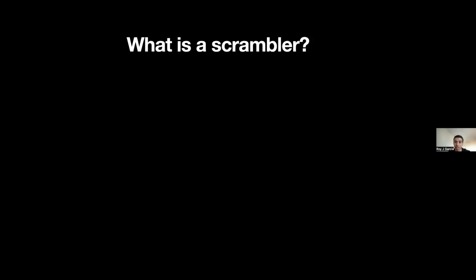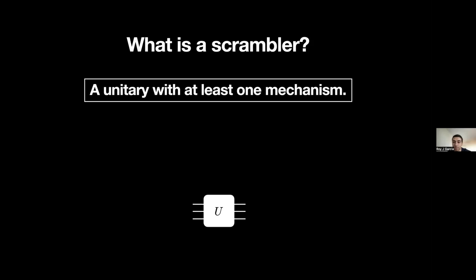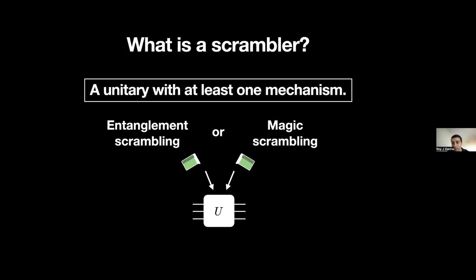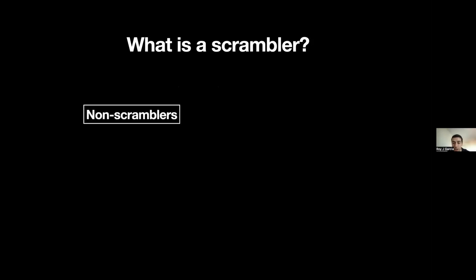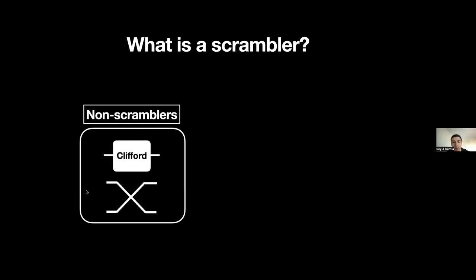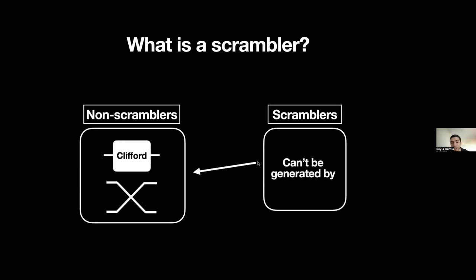We can now answer the question: what is a scrambler? We define a scrambler as any unitary which has at least one mechanism — it can either have entanglement scrambling, or generate magic scrambling, or do both. A non-scrambler is any unitary which doesn't have either scrambling mechanism, and these non-scramblers are always generated by single-qubit Clifford gates and swap gates. By default, a scrambler must be any unitary which cannot be generated by this gate set.